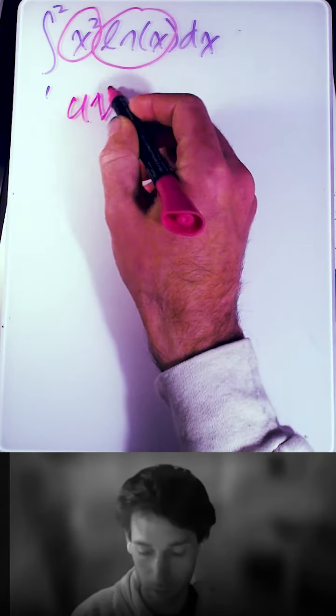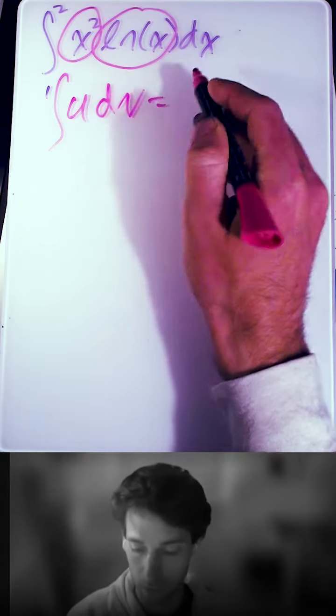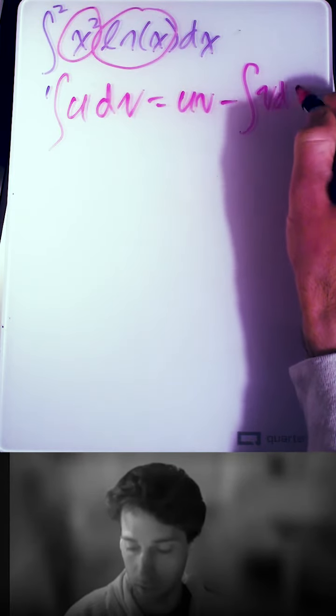So uv, the integral of u dv is equal to uv minus the integral of v du.